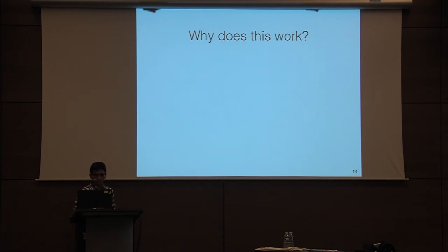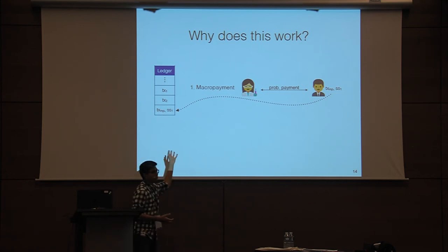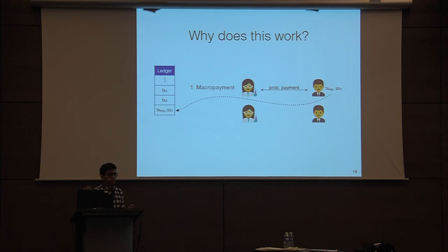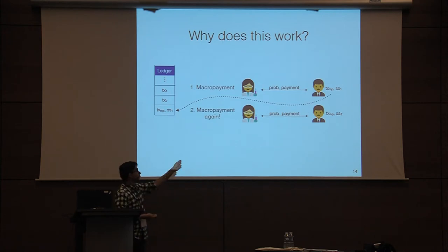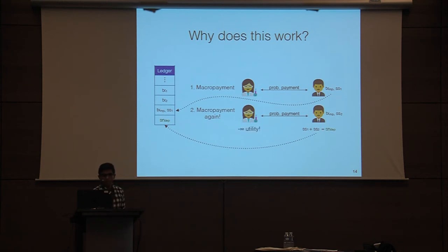Why does this help? Let's say Alice is transacting with Bob — it's a macro payment. He gets the transaction and the secret share and posts it to the ledger. Now if Alice cheats and interacts with another merchant and it becomes a macro payment again, this other merchant gets a different secret share of the serial number and is able to recover the serial number and append it to the ledger. At this point Alice's deposit is revoked and she has negative utility.